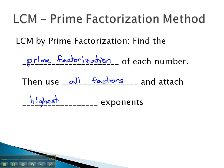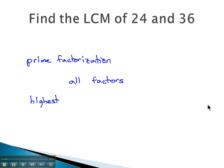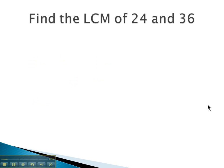That means the highest exponent on a 2, the highest exponent on a 3, and so on. So for example, if we were asked to find the least common multiple of 24 and 36, we would start by finding the prime factorization of both 24 and 36.